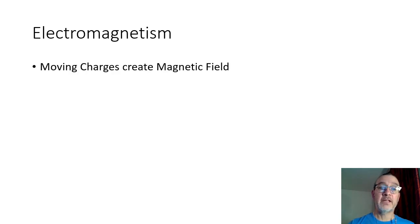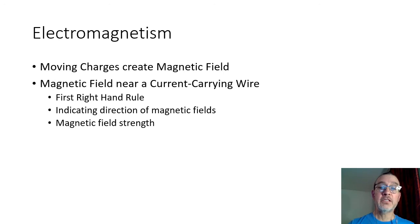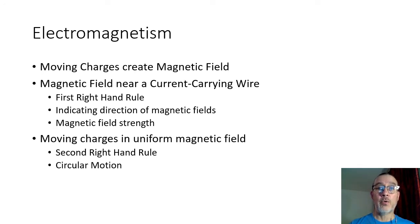In this lecture, we're going to talk about electromagnetism in terms of moving charges and magnetic fields. We're going to see how moving charges create magnetic fields, take a closer look at the magnetic field near a current-carrying wire, introduce the first right-hand rule, indicate the direction of magnetic fields, how we're going to show that on a flat piece of paper, and then talk about the magnetic field strength. Finally, we're going to talk about how moving charges are affected by an external magnetic field, introduce a second right-hand rule, and talk about circular motion induced by these magnetic properties.